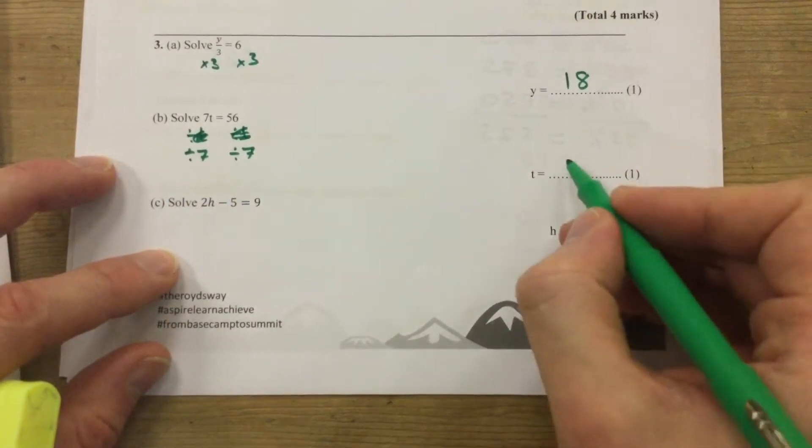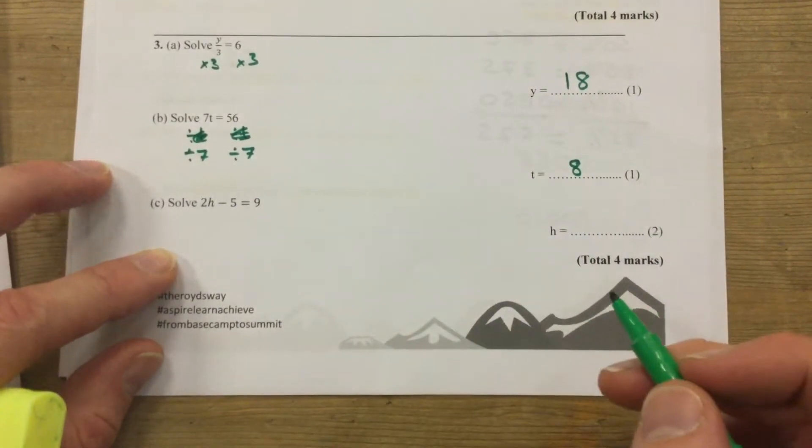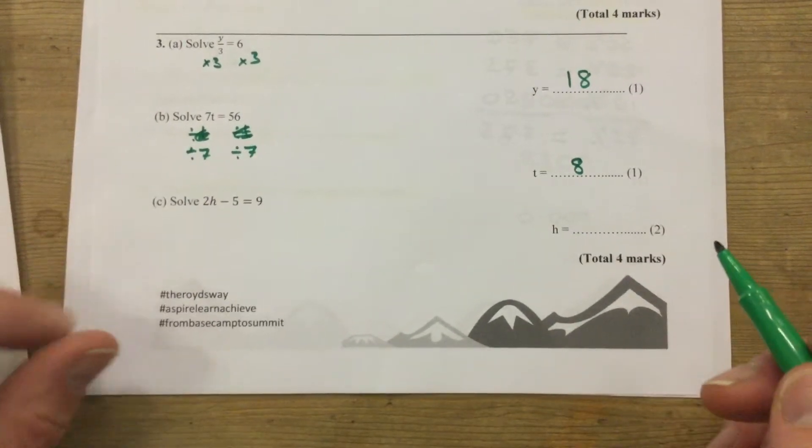56 divided by 7 is 8. Put it back in: 7 times 8 is 56. Those are both one-step equations, so worth one mark.